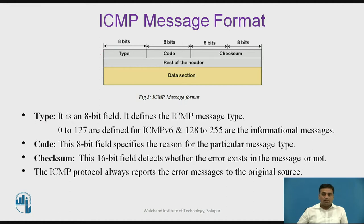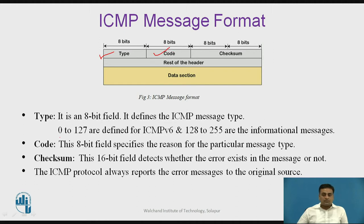The ICMP message format has four fields common to all message types. The first is an 8-bit type field, which defines whether it is an error reporting message or a query message. Values 0 to 127 are defined for ICMPv6, and 128 to 255 are used for informational messages. The second field is an 8-bit code field specifying the reason for the message. The next is a 16-bit checksum field calculated over the whole ICMP header and data section. The rest of the header contains all zeros.